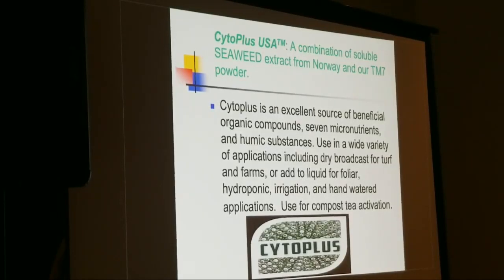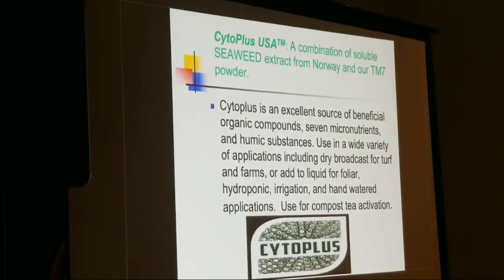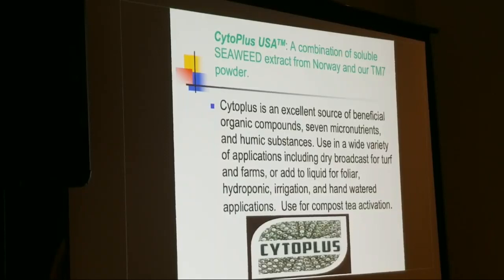Our solution is Cellular Plus — a combination of Norwegian kelp extract soluble powder, activated humic substances (soluble), and trace elements at specific concentrations and ratios. These trace elements aid enzyme activation; they're actually components of enzymes. Iron, cobalt, and molybdenum are crucial for soil microbes and fungi. We use Cellular Plus at the time of sexual differentiation, but you can use it any time.